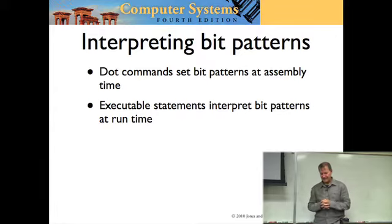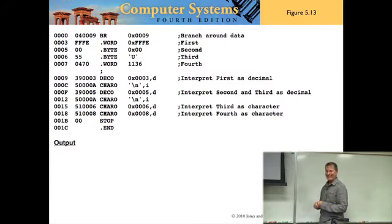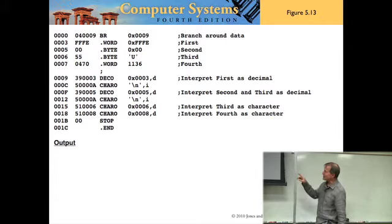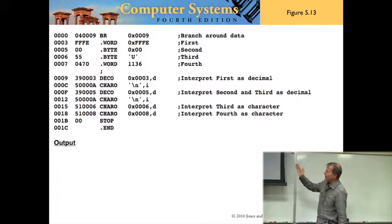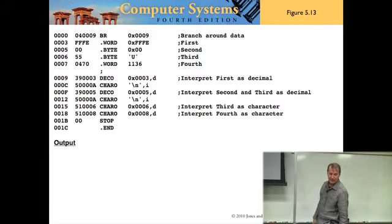Here's a little pop quiz. In figure 5.13 I've given you not only the source but the program listing that includes the machine code generated in the second column. Let's see if you can predict what the output would be. The first output is going to be negative two — it's a decimal output with direct addressing at 0003, which is FFFE. So that's negative two.